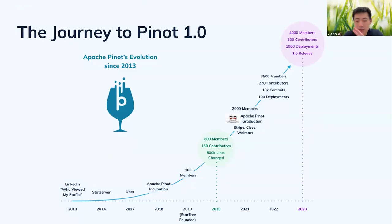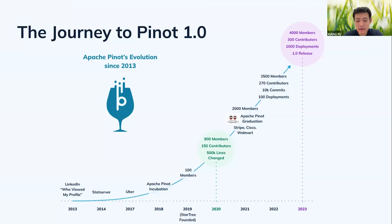Since then, Pinot got more traction and was adopted at Uber, where they started using it for their internal data analytics stack. It was mostly for internal real-time data analytics as well as core product analytics for Uber, which is a super real-time business involving real-time interaction with delivery people and those who order food. In 2018, we moved Pinot into the Apache incubation, which is where we really started to build the community.